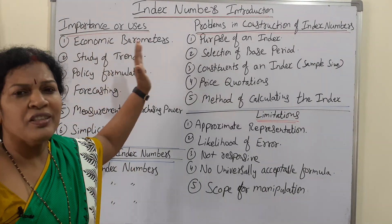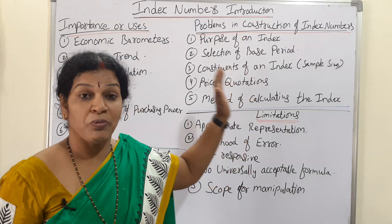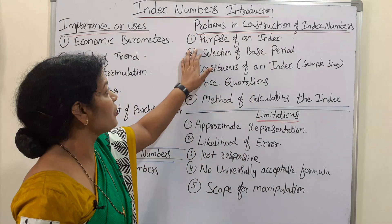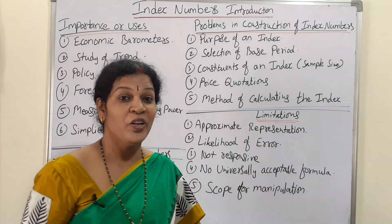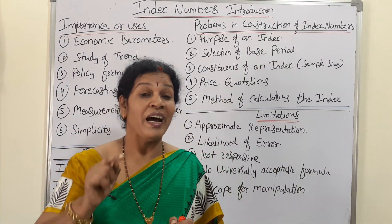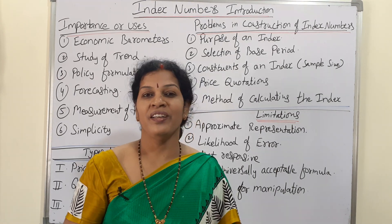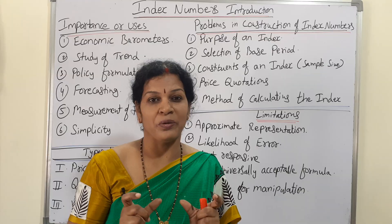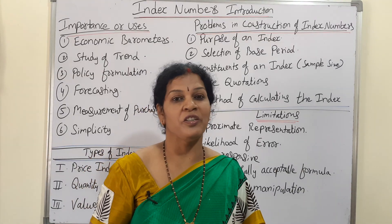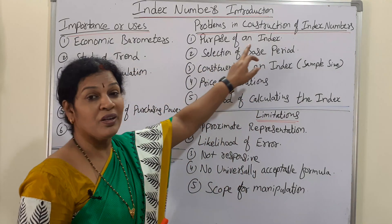Now there are some problems in the construction of index numbers. The first problem is the purpose of an index. You must know very clearly what is the purpose of calculating index numbers. Unless a person has good knowledge, he cannot understand what to calculate, when to calculate, and what is the use of that. If you don't know the purpose, simply calculating is not going to work. That is why experts are needed — if the purpose is not clear, there is no use.